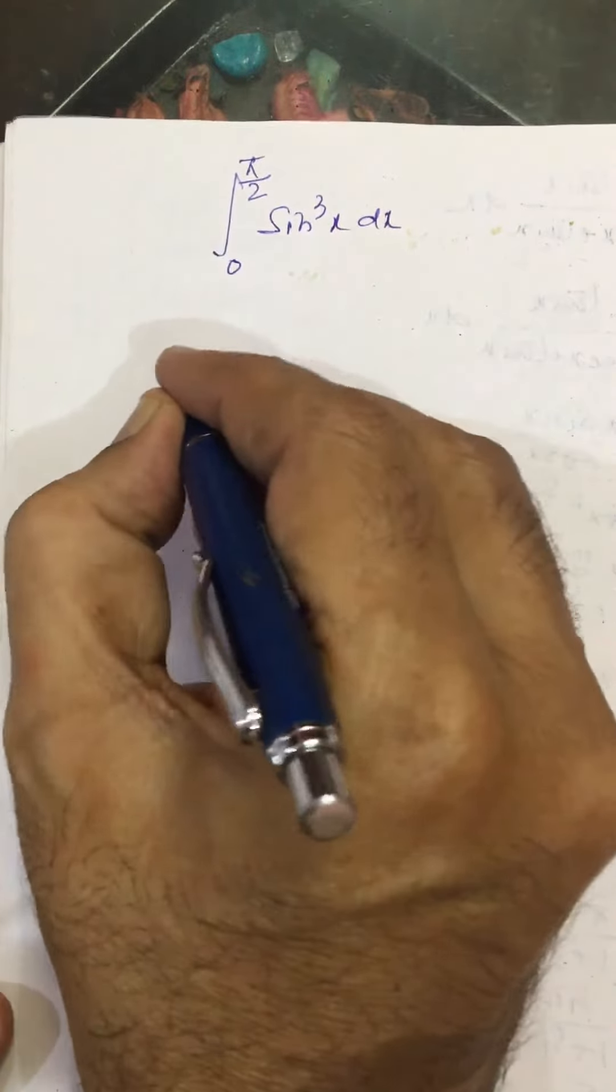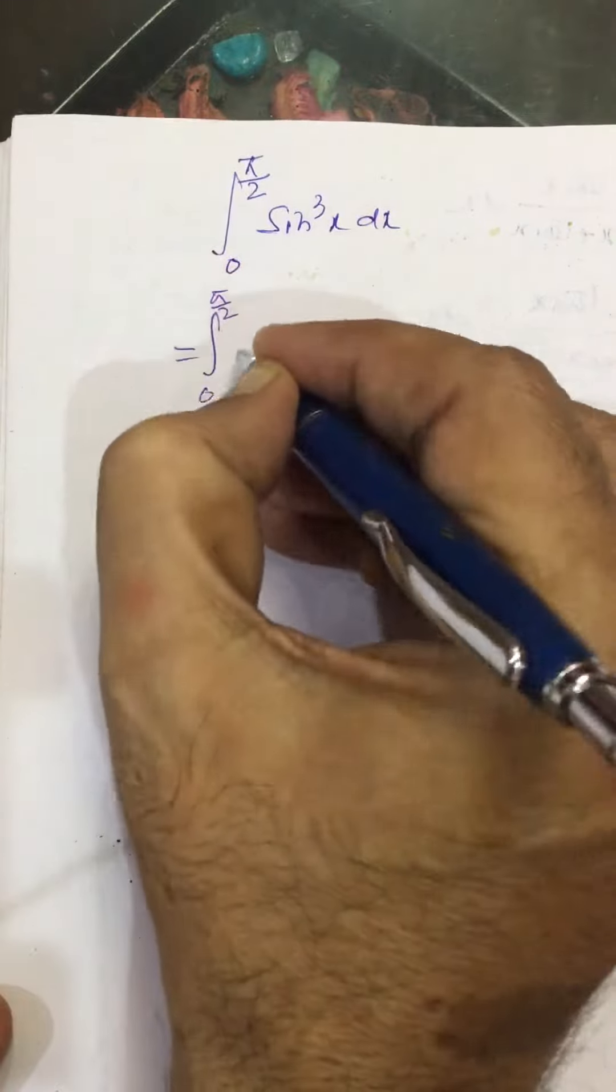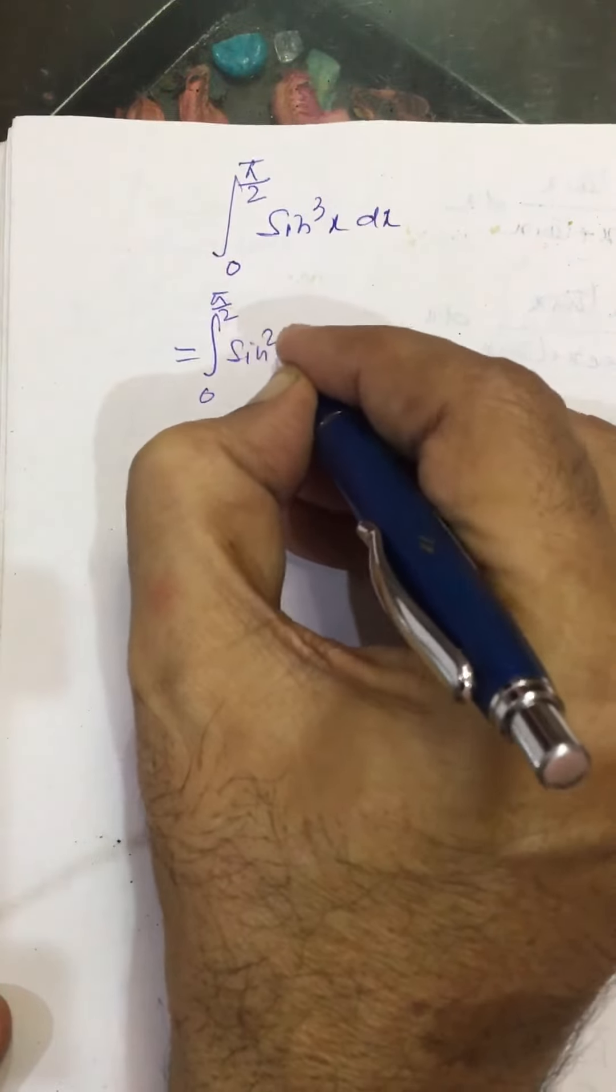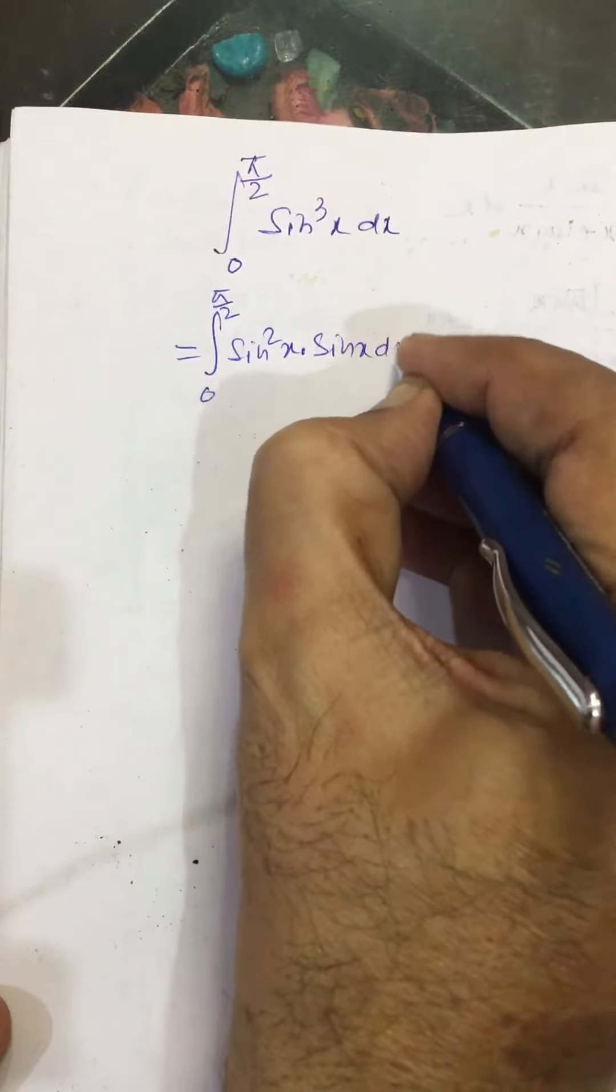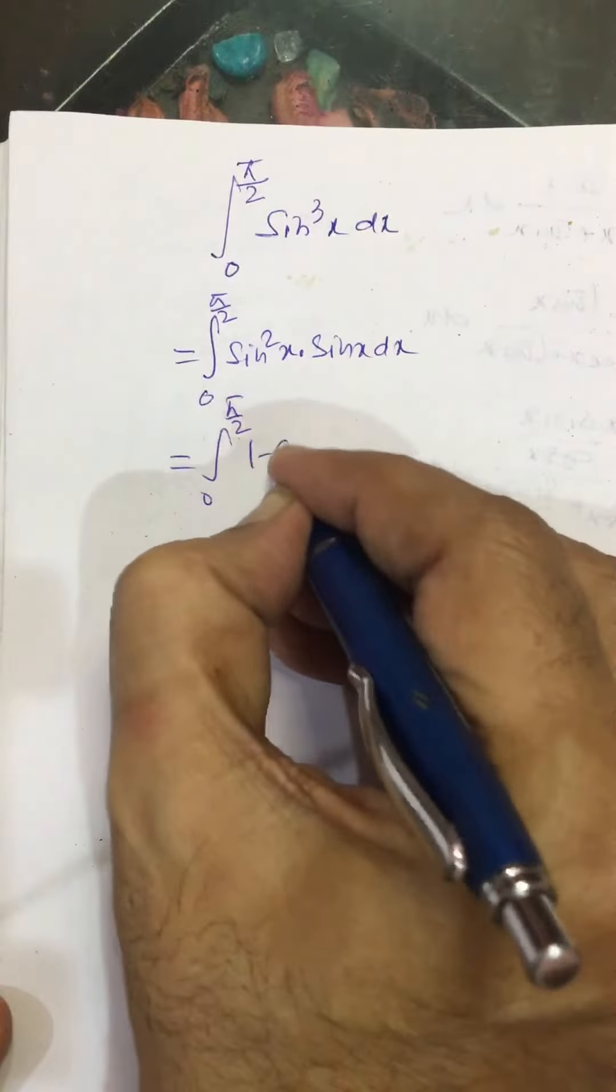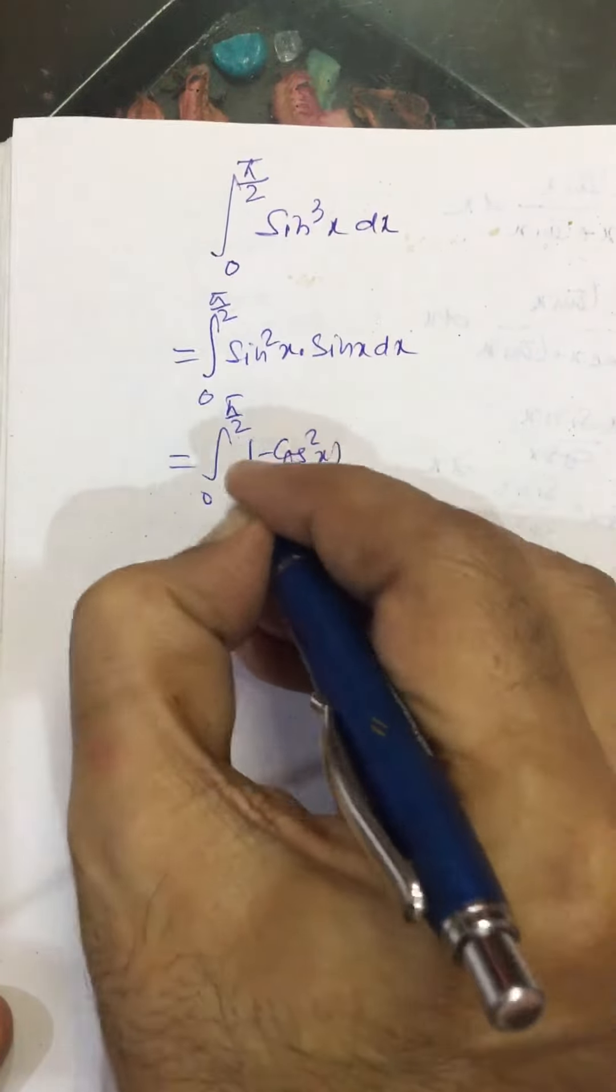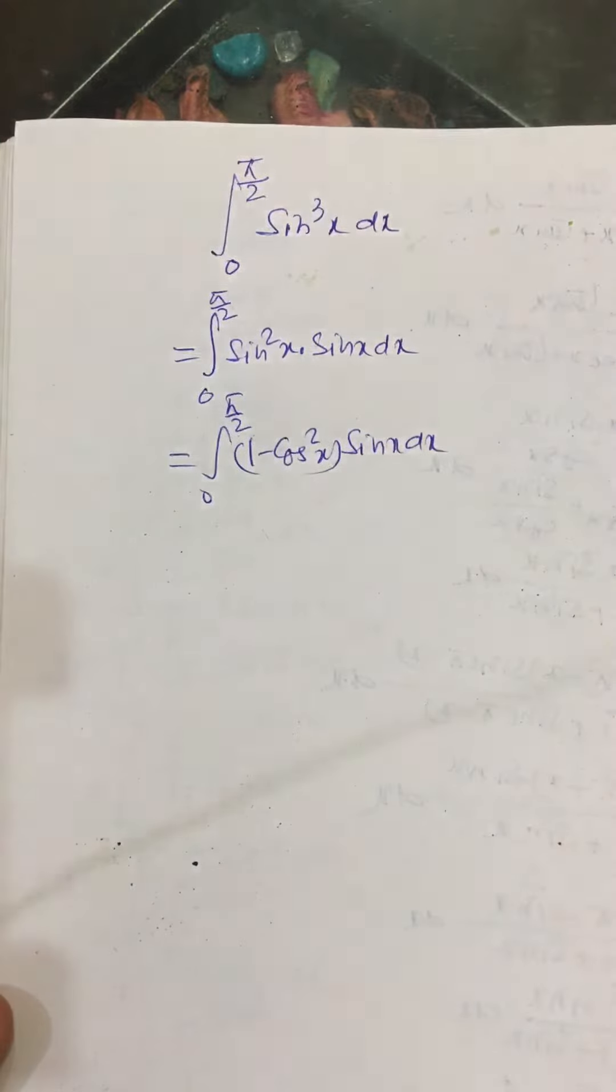We can rewrite it like this: integral from 0 to pi by 2 of sin squared x times sin x dx. This we can write as sin squared x is 1 minus cos squared x times sin x dx.